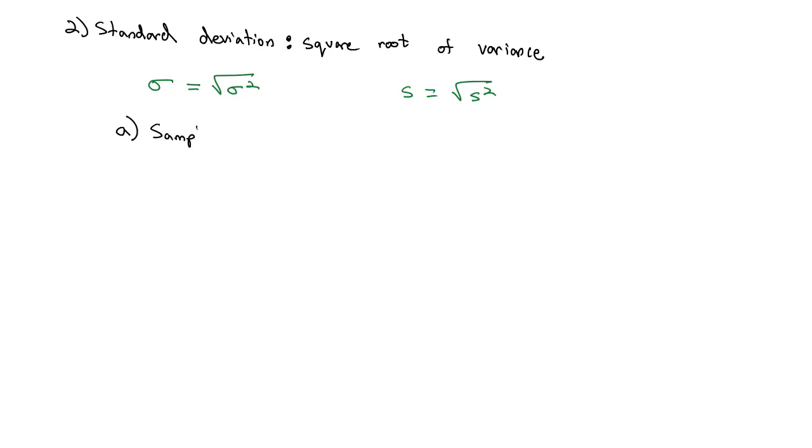So if we had a sample data of 3, 5, 6, 6, 7, we already found out that the variance of this sample is equal to 2.3. And so if I want the standard deviation of the sample, we just take the square root of 2.3 to get a standard deviation of 1.52.